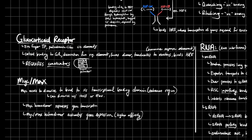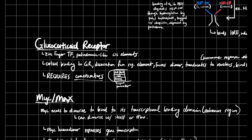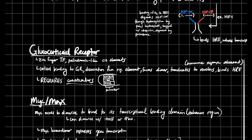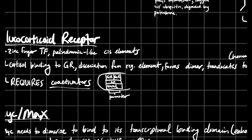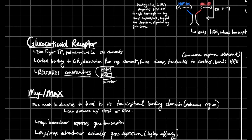We also have glucocorticoid receptors, MYC-MAX, and RNAi. Glucocorticoid receptors are zinc-finger transcription factors — a little different from the traditional transcription factor, but they still function similarly. They have palindromic-like cis elements, meaning if you read 5' to 3' on the top strand, it reads the same on the bottom strand 5' to 3'. There are some nucleotides in the middle that differ, but the characteristic palindromic-like cis elements are on the sides.